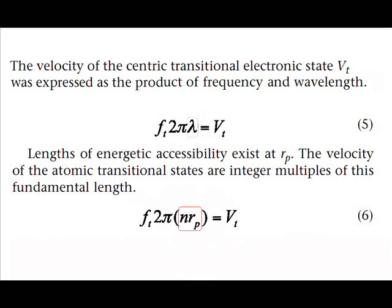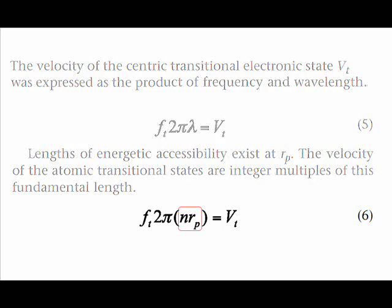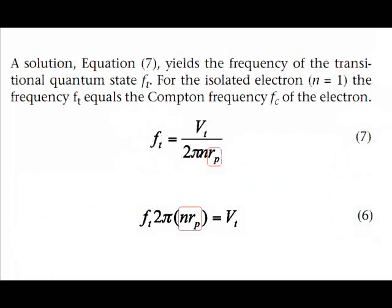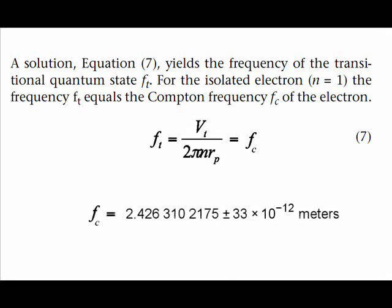Lengths of energetic accessibility exist at rp. The velocity of the atomic transitional states are integer multiples of this fundamental length. A solution yields the frequency of the transitional quantum state, vt, for the isolated electron. This frequency, vt, also equals the Compton frequency, vc, of the electron.